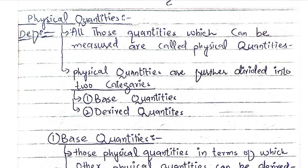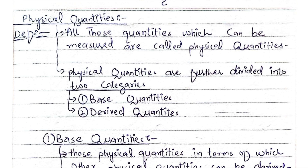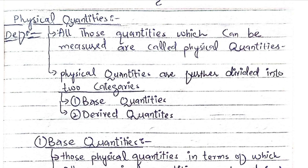What is a physical quantity? The definition of a physical quantity is: a quantity is called a physical quantity if it can be measured. All those quantities which can be measured are called physical quantities. Every measurable quantity is called a physical quantity.